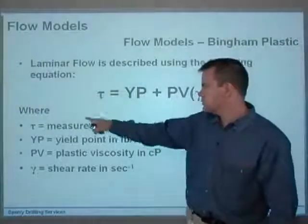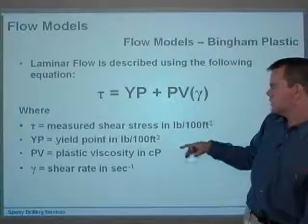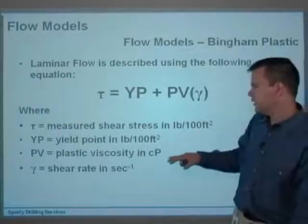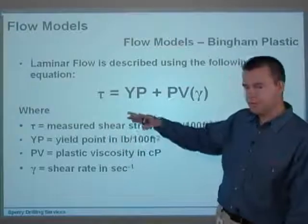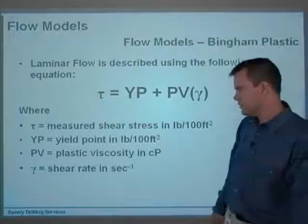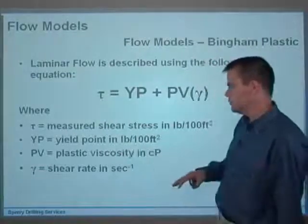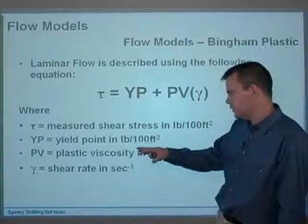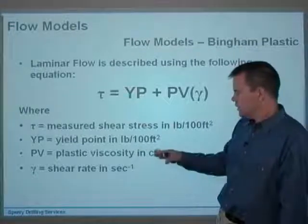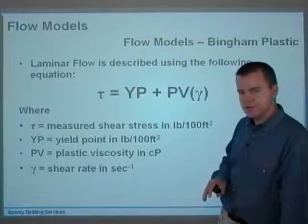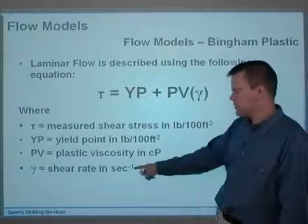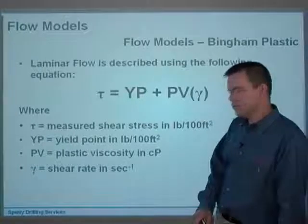Just to explain what tau is, tau is measured shear stress in pounds per 100 square feet. YP, or yield point, is basically the yield point in pounds per 100 square feet. Usually these are the usual units, the API units I'm quoting here. PV's plastic viscosity, it's usually in units of centipoises, which I've mentioned before, and the shear rate is in per seconds, as I showed you before.